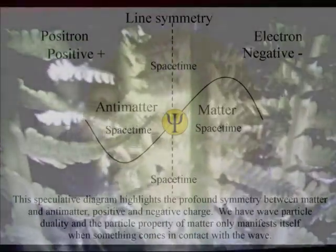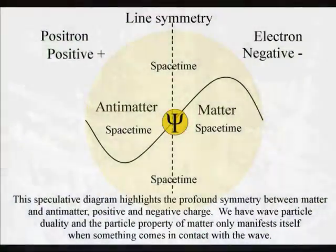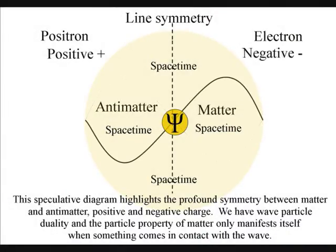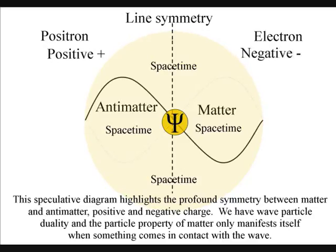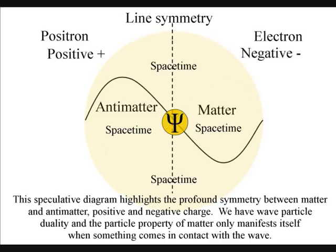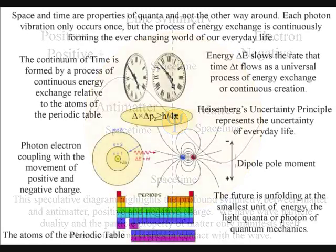In this theory, at the smallest scale, the future and the past are represented by matter-antimatter annihilation, with the 100% antimatter annihilation representing the past. In such a process, the future is unfolding at the smallest unit of vibrational energy, the light quantum or photon of quantum mechanics.